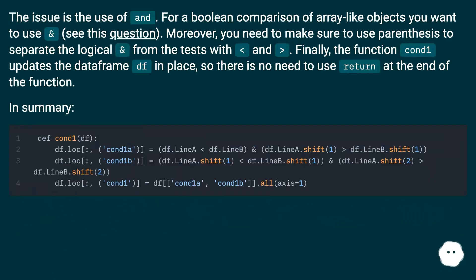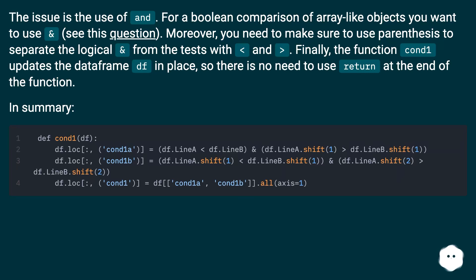The issue is the use of 'and'. For a boolean comparison of array-like objects you want to use '&' — see this question. Moreover, you need to make sure to use parentheses to separate the logical AND from the tests. Finally, the function cond1 updates the dataframe df in place, so there is no need to use 'return' at the end of the function.